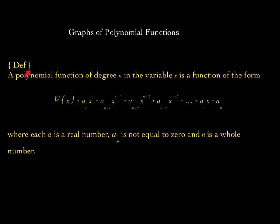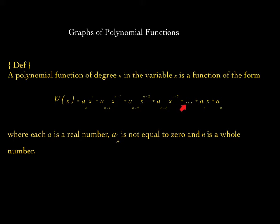A polynomial function of degree n in the variable x is a function of this form: P of x is equal to a sub n times x to the power of n, plus a sub n minus 1 times x to the power of n minus 1, plus a sub n minus 2 times x to the power of n minus 2, and so on, down to a sub 1 times x to the power of 1, plus a sub 0.